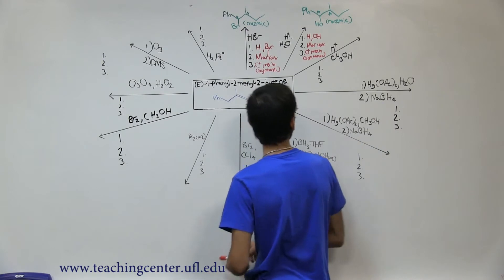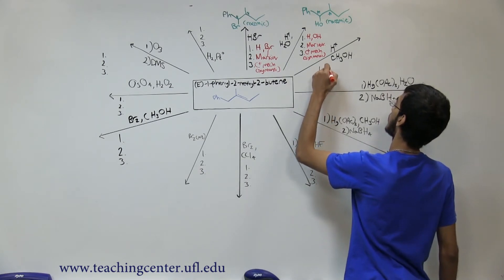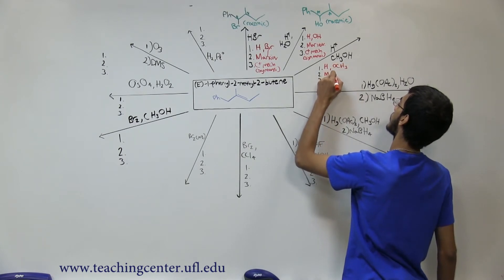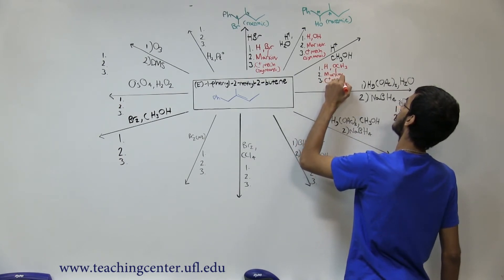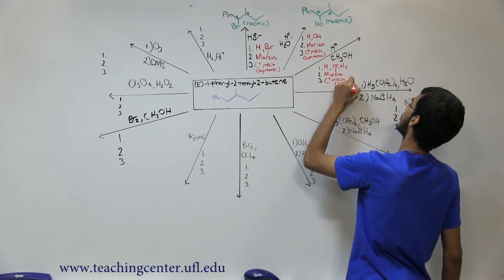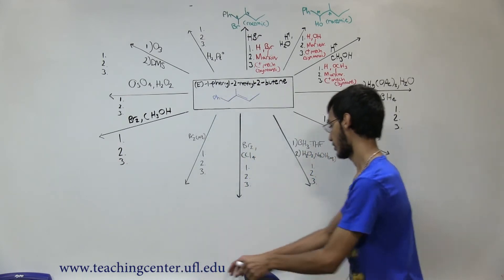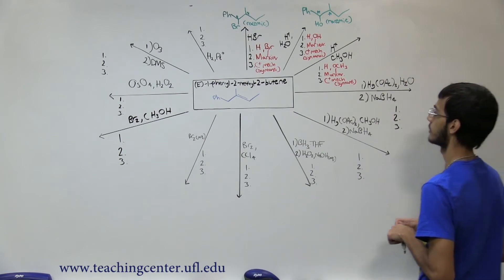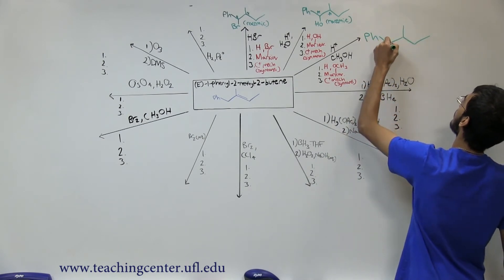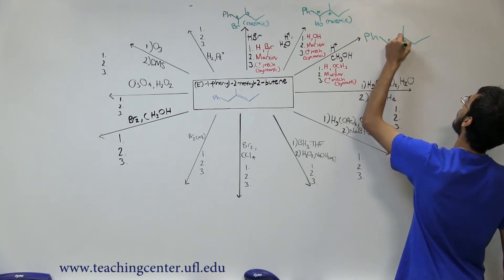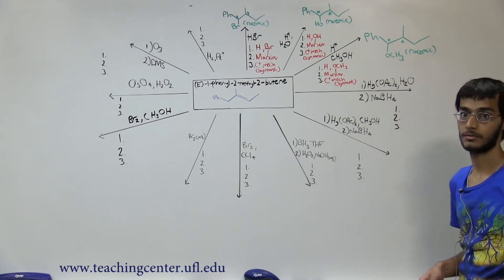The next reaction is acid-catalyzed alcohol addition. The 1-2-3s: we add H and OCH3, Markovnikov for the OCH3, and it's a C+ mechanism giving syn plus anti. For this molecule the carbocation adds at the tertiary position and rearranges to the benzylic position. Again we're going to get a racemic mixture of all stereoisomers at the chiral centers because of the C+ mechanism.